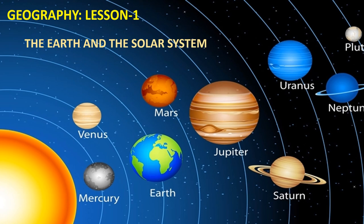Hello students, welcome to the online classes of social studies. Let's continue chapter 1 of Geography, the Earth and the Solar System. In the previous class we had learnt about the sun and the stars, the universe, nebula, stars and constellation. Today we shall learn about galaxy, planets, sun, solar system and so on.